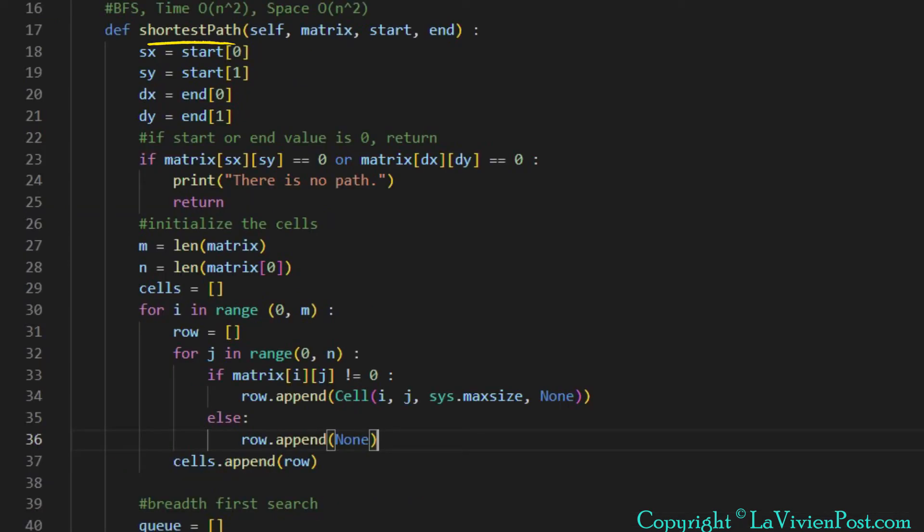At the top of the function, it checks whether the start and end cell's values are 0. If either of them is 0, it means there is no path and returns. Next is to define a two-dimensional array, cells, to keep track of the cell's visiting status. It functions the same as the two-dimensional boolean array visited in DFS and stores more information.